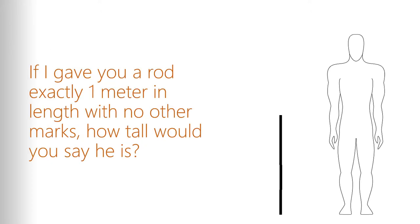So let's say I give you a rod. This rod represented by the black line is exactly one meter in height. So if I look at that rod and I say, okay, if that rod is one meter in height,